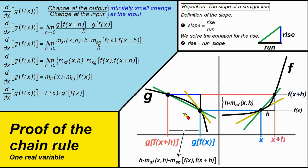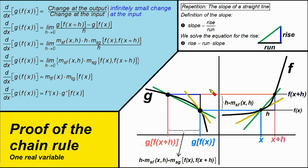Why have I done this? Because we have the input of the first function f, and this is the output of the first function. The output of the first function, the y-axis, is the input of the next function g. And here we have the output of the second function g. I rotated this graph 90 degrees counterclockwise so that the output of the first function is the input of the second function.